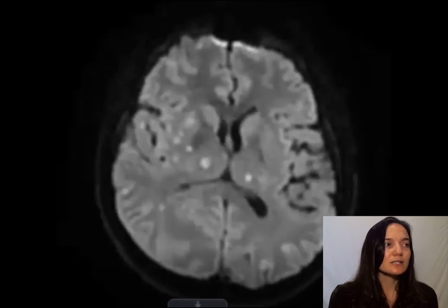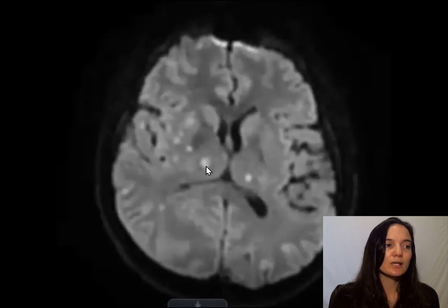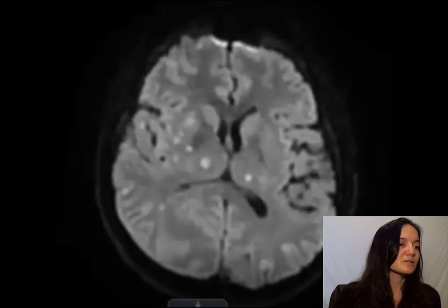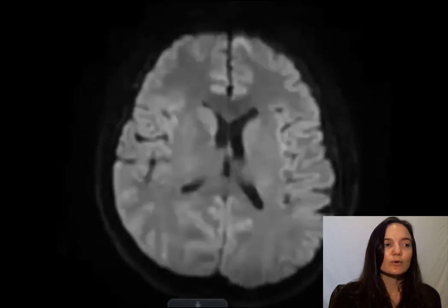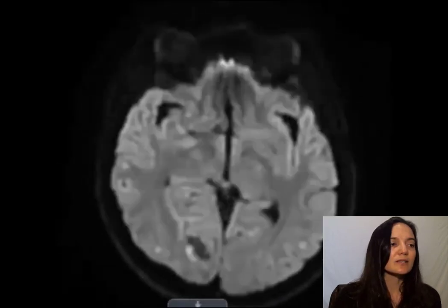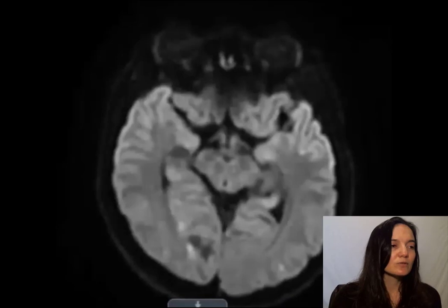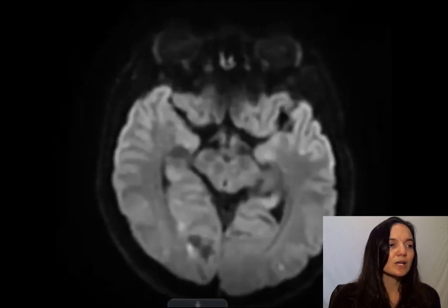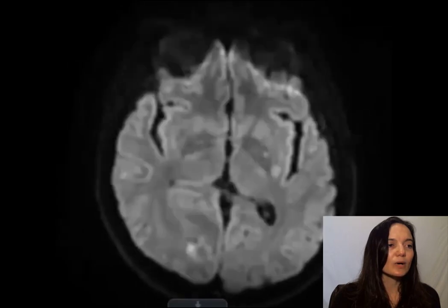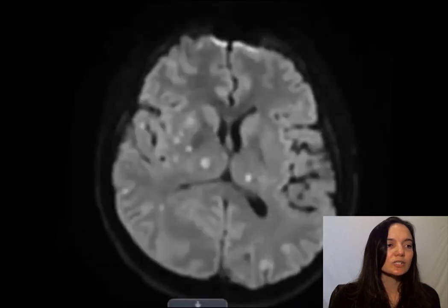This is a DWI and we can see that there are multiple lesions within this brain. Here is the thalamus and here is the basal ganglia. We can see that there are multiple lesions distributed throughout this brain, and if we scroll through we can see that there's a large lesion right here in the right occipital cortex. As we skim through the imaging we can see that there are quite a few scattered lesions throughout the brain.